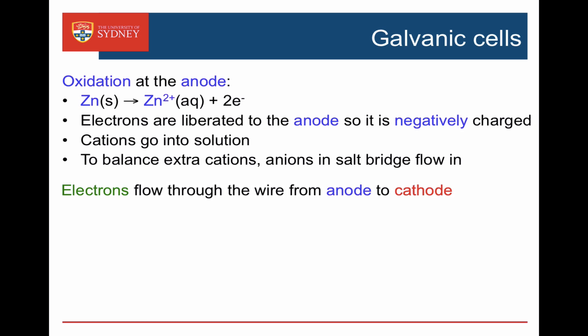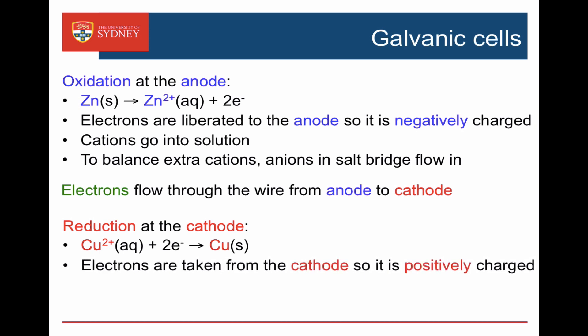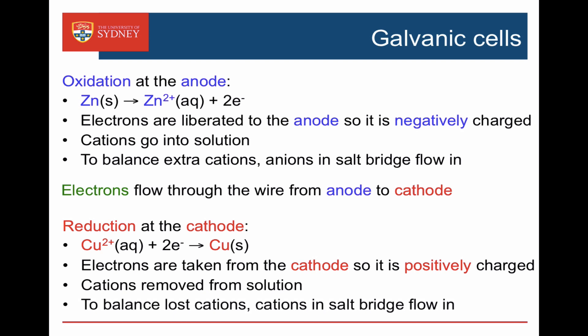The electrons that are liberated flow through the wire from the anode to the cathode, so that at the cathode, reduction can occur. The copper ions gain those two electrons to make copper metal. The copper ions are taking electrons from the cathode, and the cathode becomes positively charged. Because we're taking cations out of solution, we have to replace that lost positive charge, and cations in the salt bridge flow in.